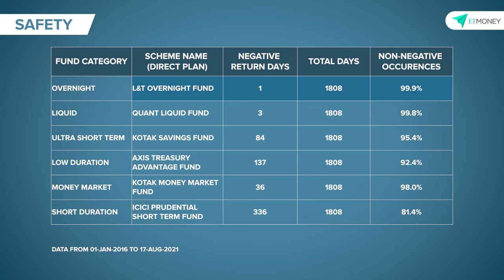This gives the scheme a 99.99% positive occurrence value. Similarly, we see some other categories like liquid funds, ultra short term and even money market funds that seem to show reasonable levels of safety when measured on a daily returns basis. So to put this together, if you're looking for something super safe, look at a bank's savings account, look at a bank fixed deposit and within mutual funds, consider an overnight or a liquid fund for maximum safety.